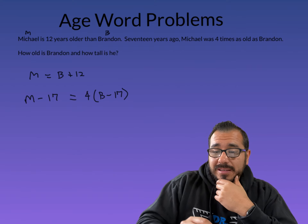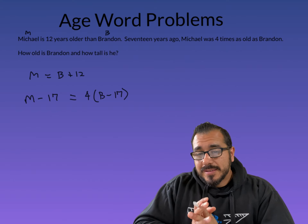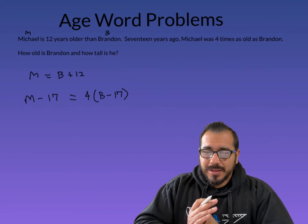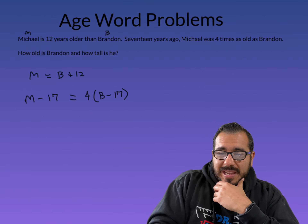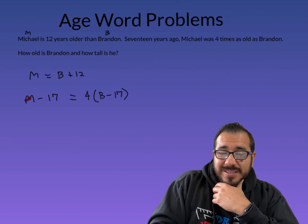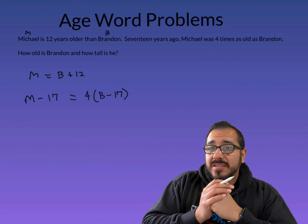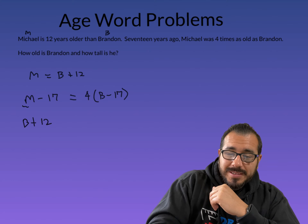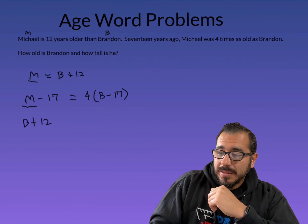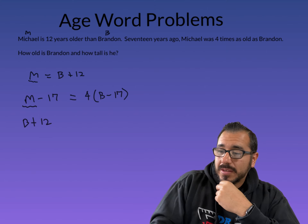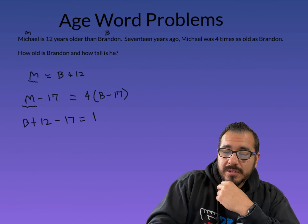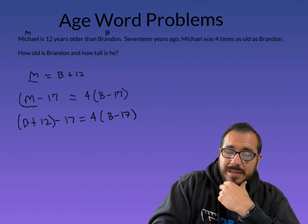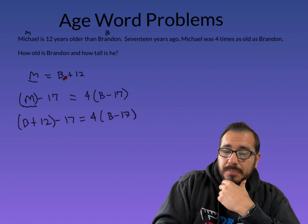Now we have two equations and two unknowns. We want to find Brandon's age, so I want everything in terms of B. We know Michael's age M = B + 12, so wherever I see an M, I'm going to plug in B + 12 — that's the substitution method. So we get: (B + 12) − 17 = 4(B − 17). I'm replacing M with B + 12 — you can color-code that to keep track.